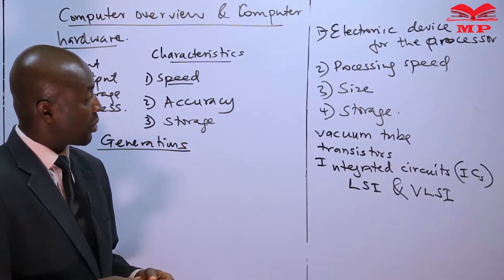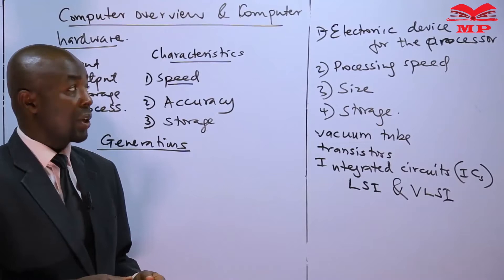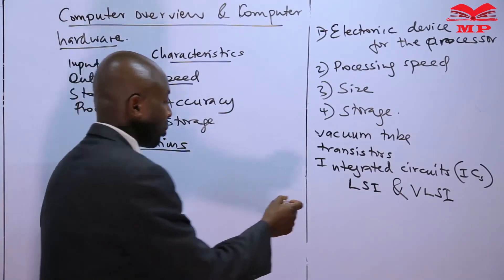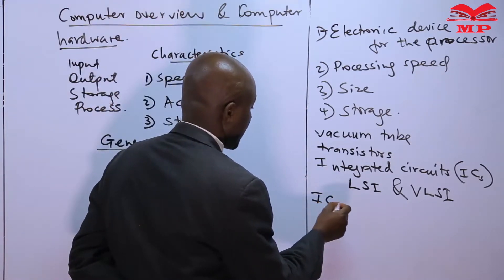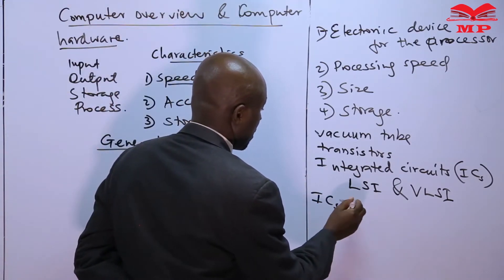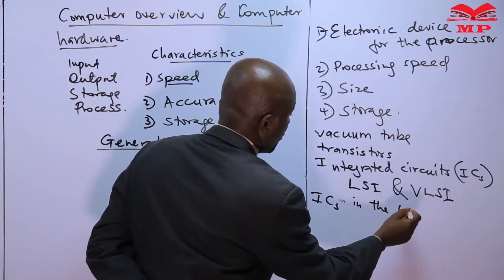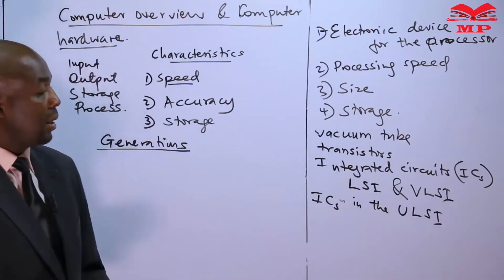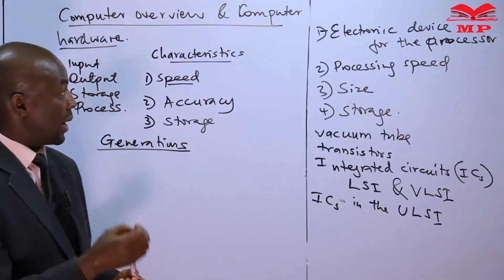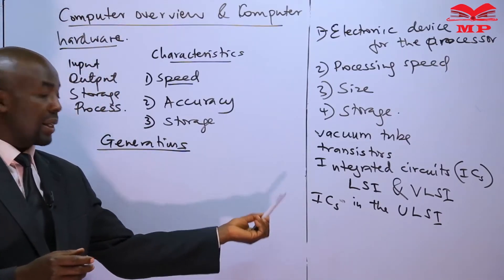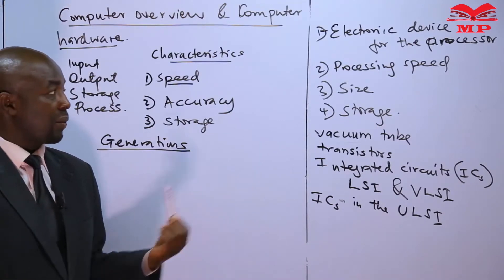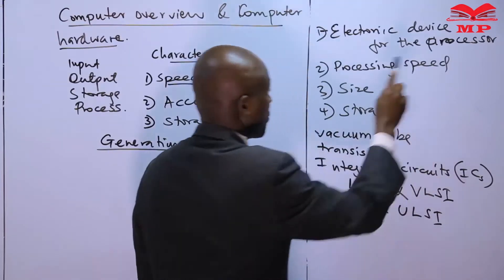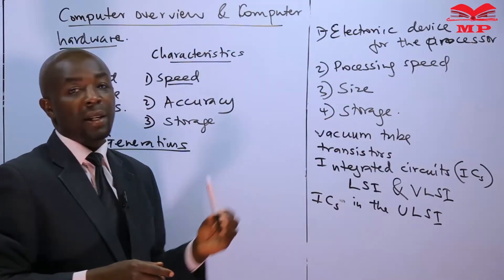The fourth generation computers were even much smaller than the third generation computers because they were still using ICs in ULSI integration — that is the ultra-large-scale integration — for the design of the processor. That gave them serious fast processing speeds, good storage, and small size.